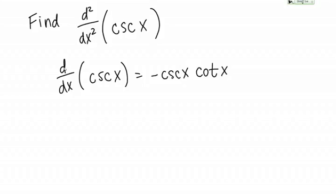We actually want to find the second derivative. We need to now take the derivative of the answer we just got. We need to take the derivative of cosecant X times cotangent of X.